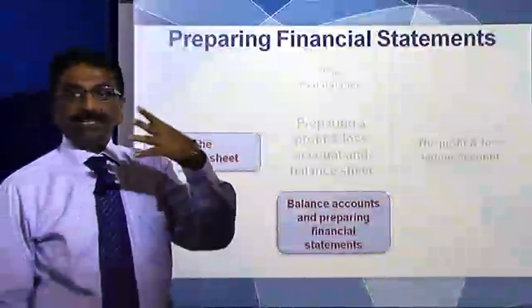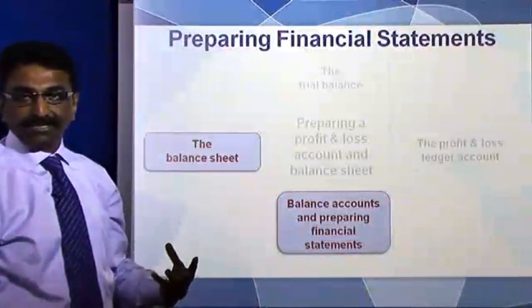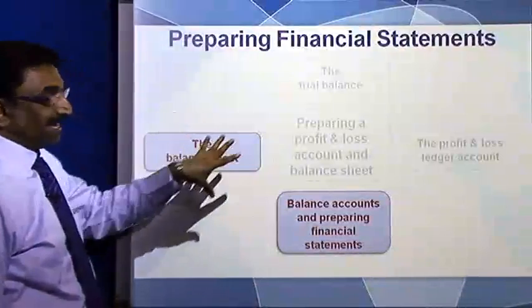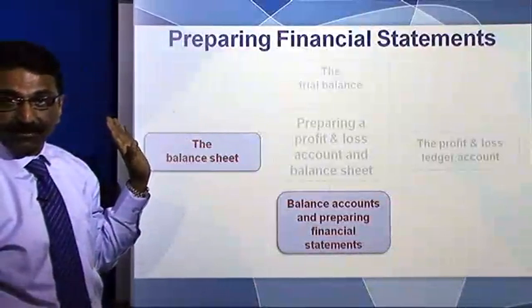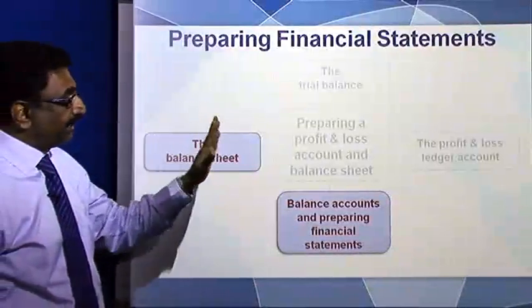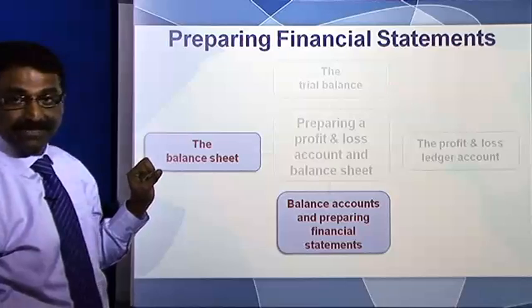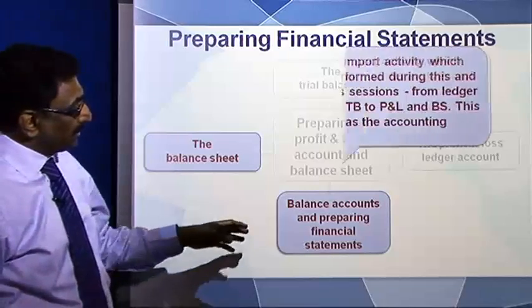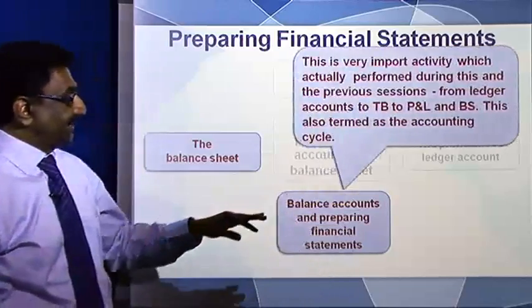What we have done: we have already constructed the P&L ledger account, the income statement, and also the balance sheet in the session we just went through, and therefore this objective has been achieved. So what we are talking about is the accounting cycle here.